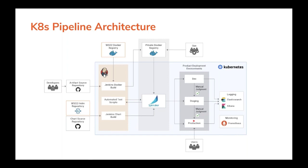The second way is a cron job in Jenkins which pulls the base image to create a customized image and pushes it into the private Docker registry. Spinnaker listens to that change, pulls the updated image, and updates the relevant environment. The third way is when a new artifact is added to the Docker file in the GitHub artifact source repository. A customized image is then pushed to the private Docker registry and Spinnaker will deploy it.